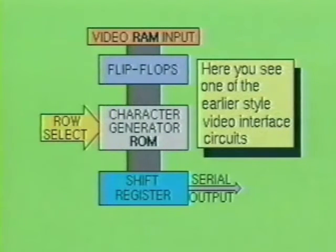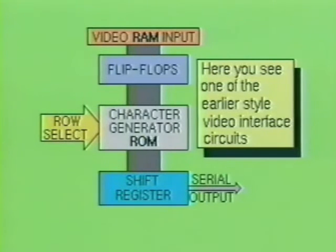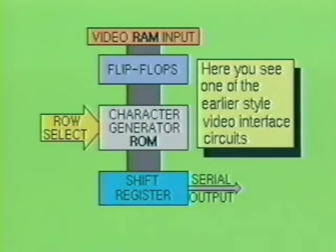Earlier video interface circuitry consisted of a character generator with latched inputs and a shift register at the output. The character generator was basically a ROM device which contained all the alphanumeric characters, called the character font. We will begin by examining how this simple circuit worked.